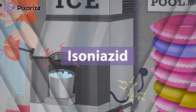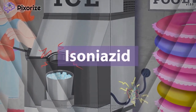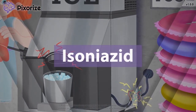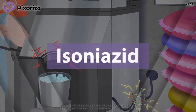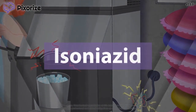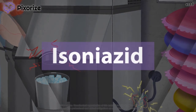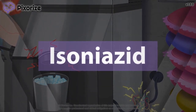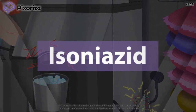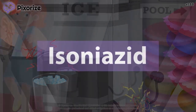Isoniazid is a medication used to treat tuberculosis. In this visual mnemonic, I will teach you an easy way to remember everything you need to know about isoniazid for test day. Let's jump in.